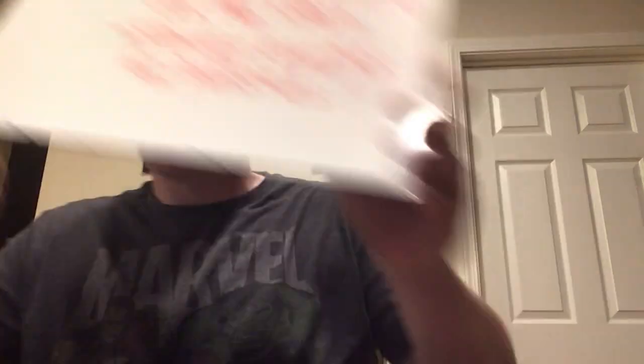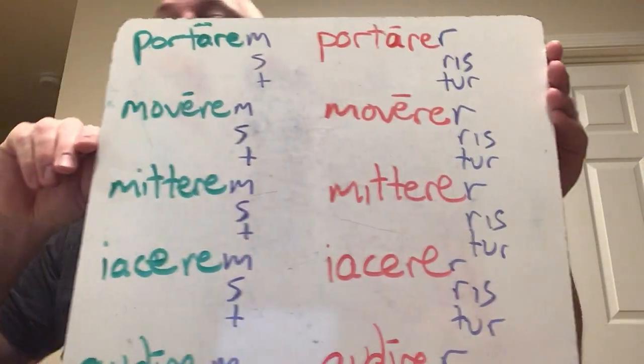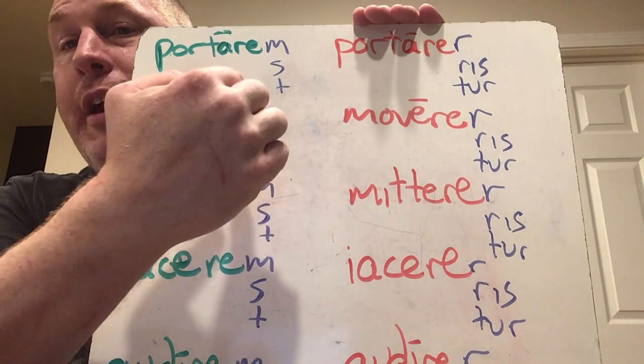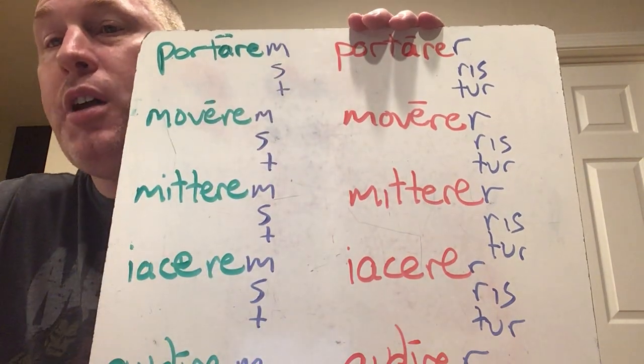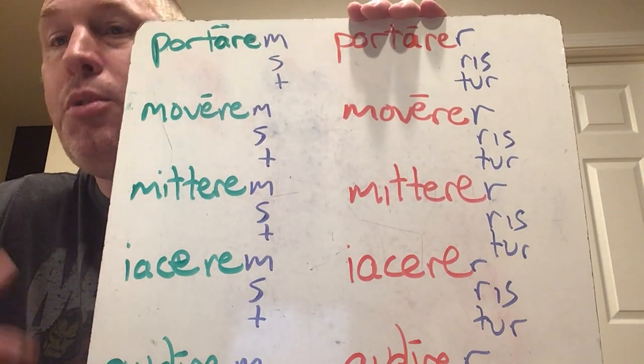M, S, T, mus, tis, nt. I know some of you are thinking, wait, what happened to O? But if you remember, making an O and making an M, your mouth is doing the same thing, so it ends up being very similar. Now, what we have here is your standard verbs, non-deponents. The active: portare — portarem, portares, portaret, portaremus, portaretis, portarent.